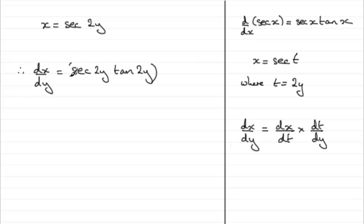And if I put that in brackets, we now need to multiply it by dt dy. And if t was 2y, differentiate 2y with respect to y, you get 2. And this would look a lot better now if I just wrote the 2 at the front here. So we get 2 sec 2y times tan 2y.